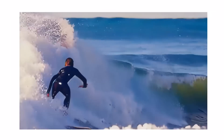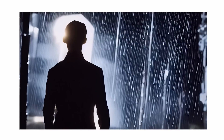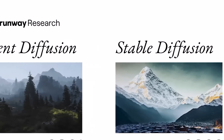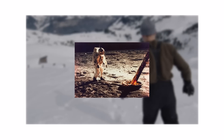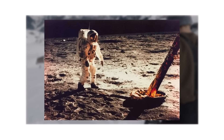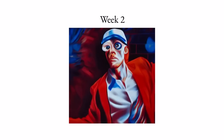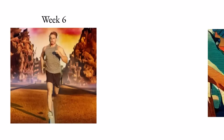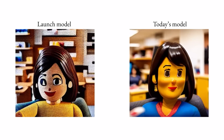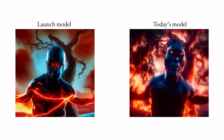First up we have Runway ML Gen 2, a video tool that allows you to paint different styles over video clips. This allows you to create impressive special effects on zero budget. You can either type a prompt or use an image as a reference, like this Space Cadet. The image style is overlaid onto the video, changing the aesthetic completely. It's fantastic for creating very aesthetic different animation styles, and the mask mode allows you to select single objects in a scene and give them a unique look.